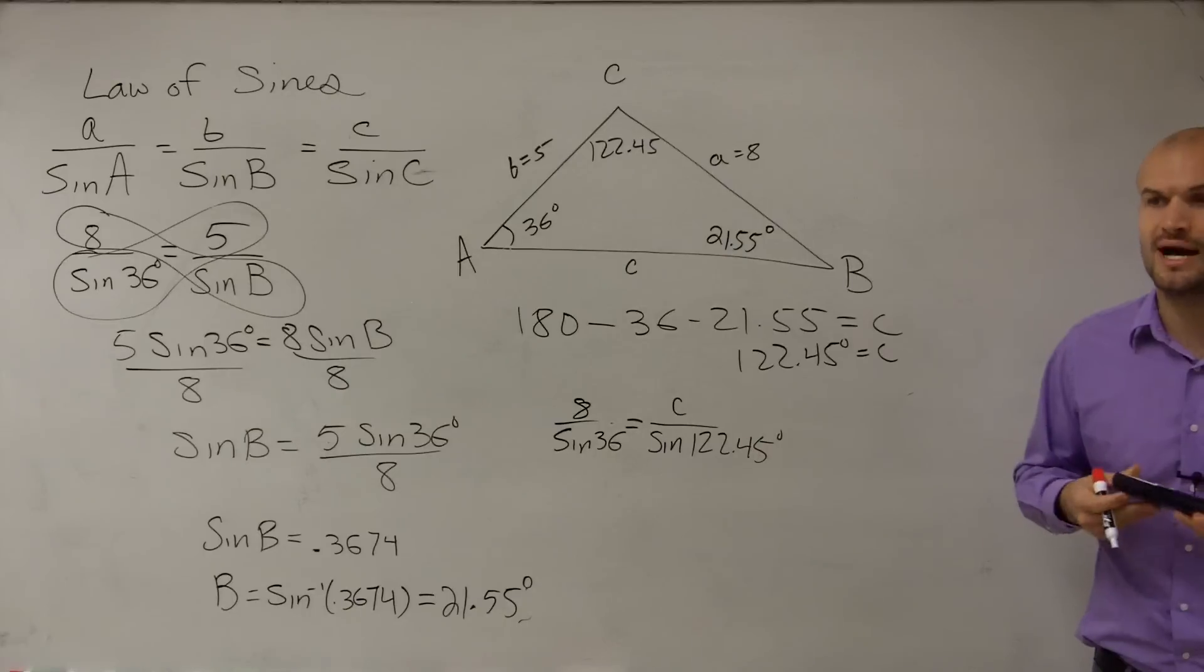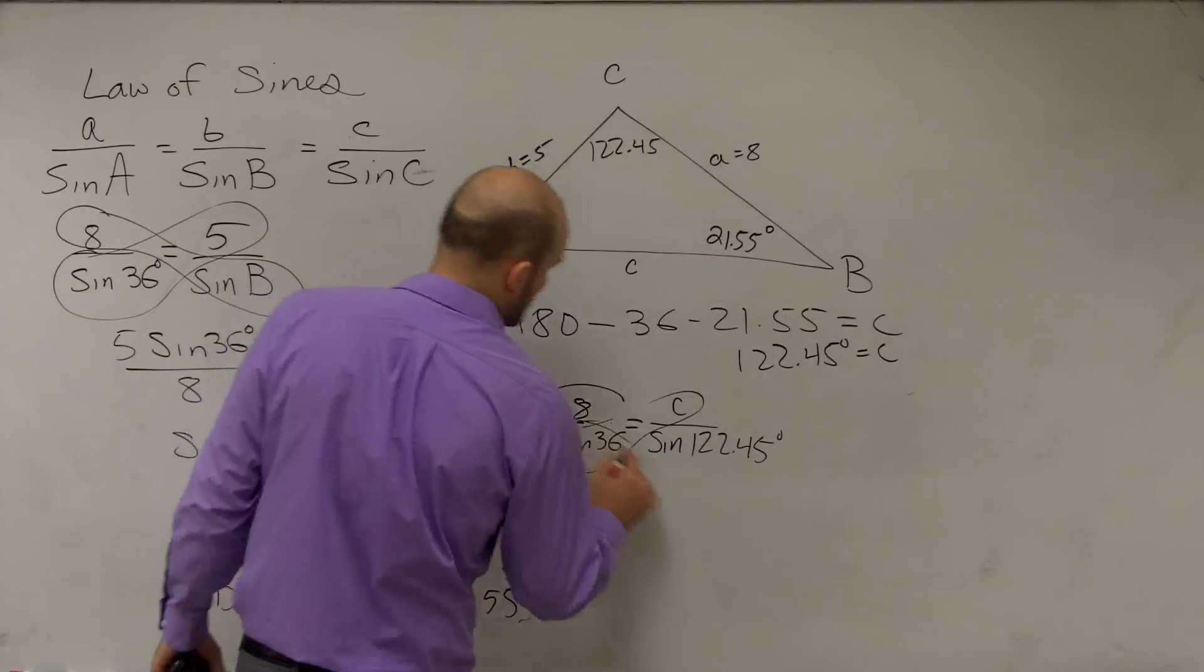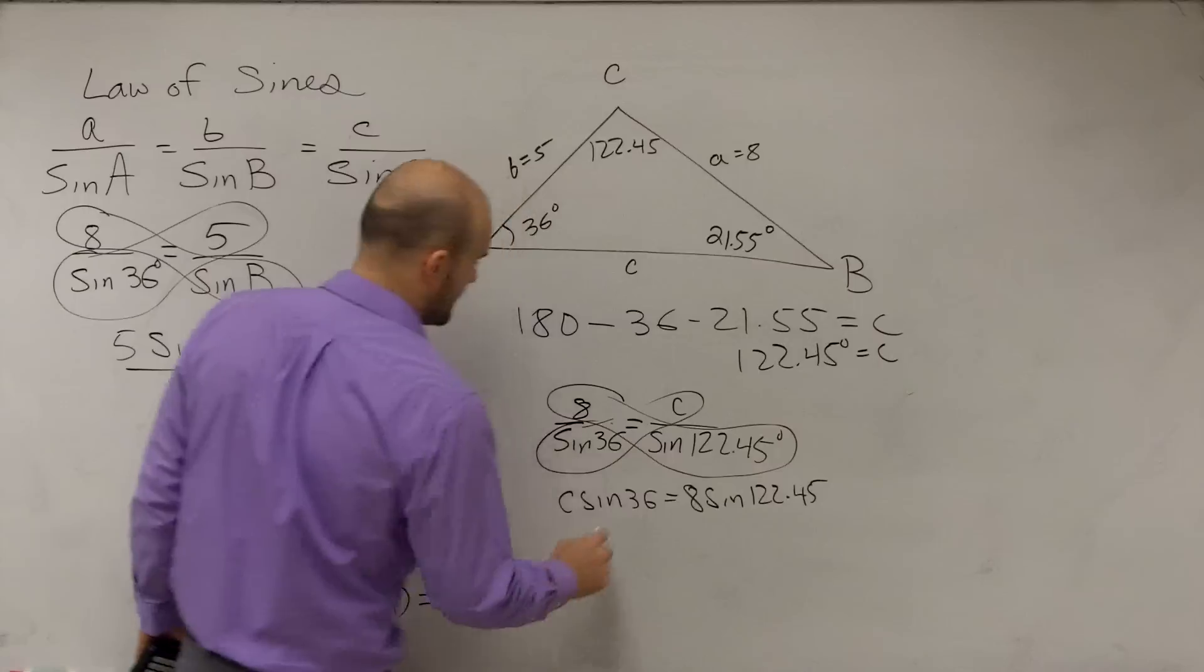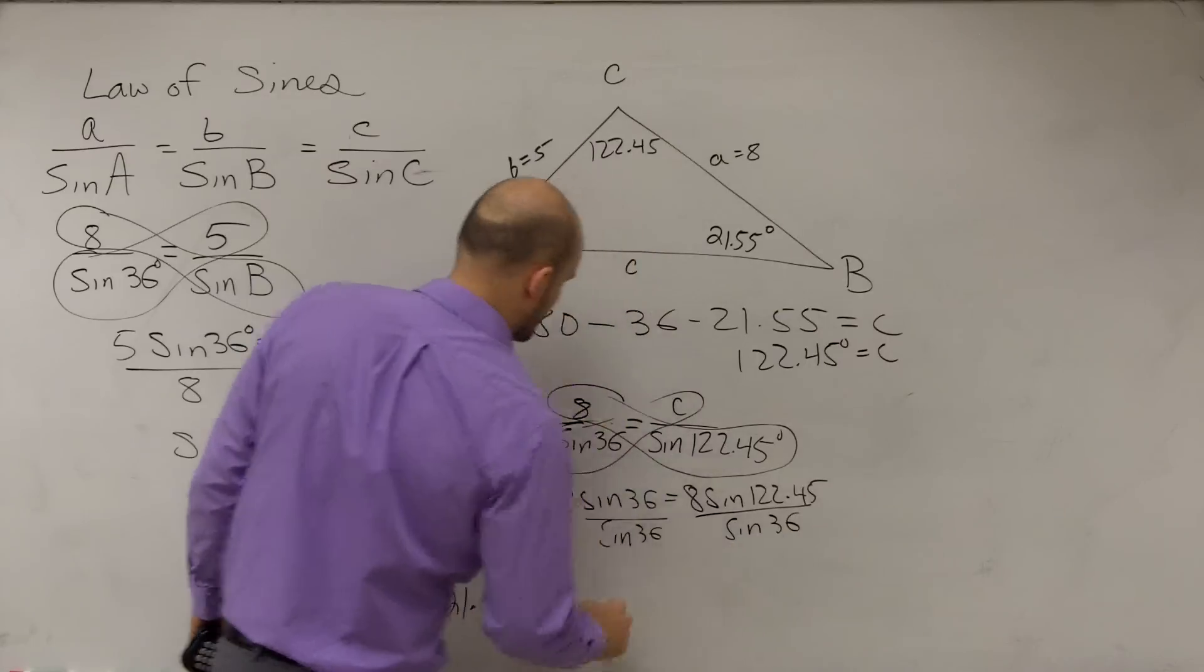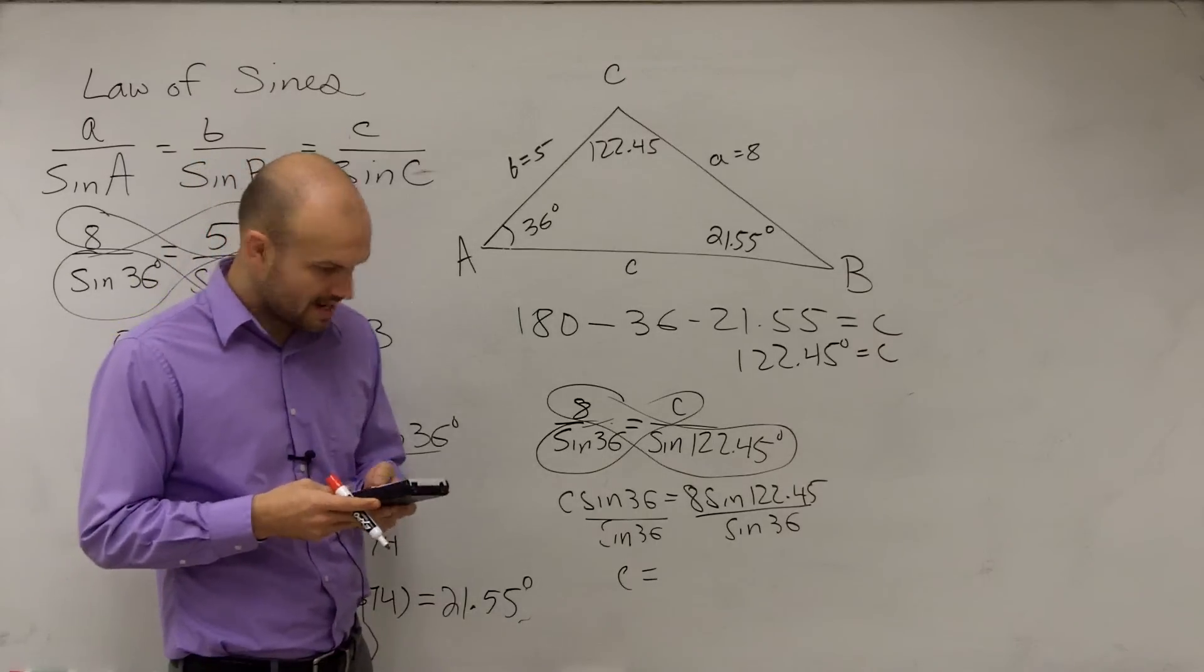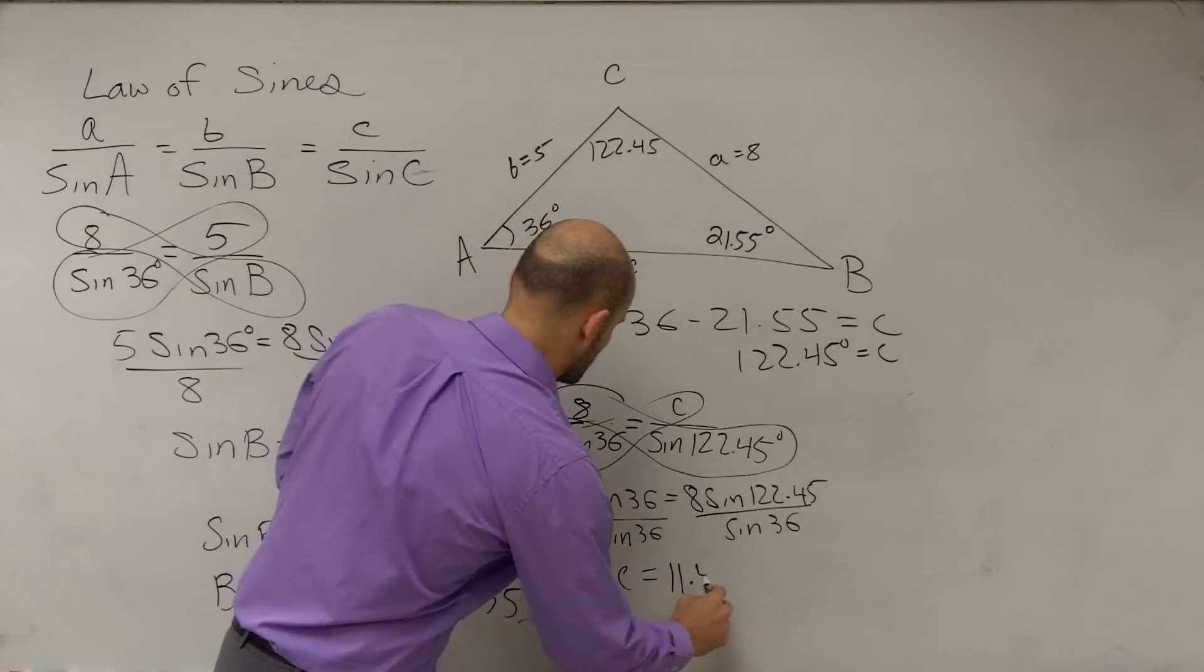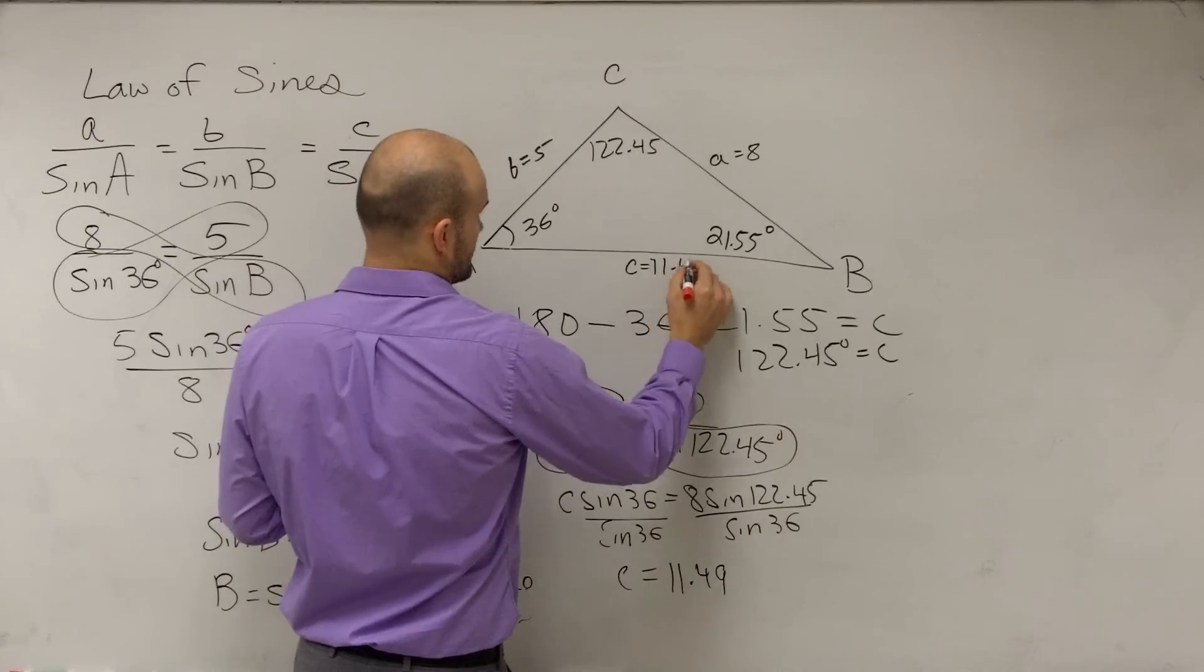Does everybody see how I just applied now, again, the same formula to use here? So now, again, we can cross-multiply. And therefore, I get C times sine of 36 equals 8 times sine of 122.45 divide by sine of 36. And therefore, I get C equals—so I do 8 times the sine of 122.45 divided by the sine of 36. And I get 11.49 as I round. So we can see C equals 11.49.